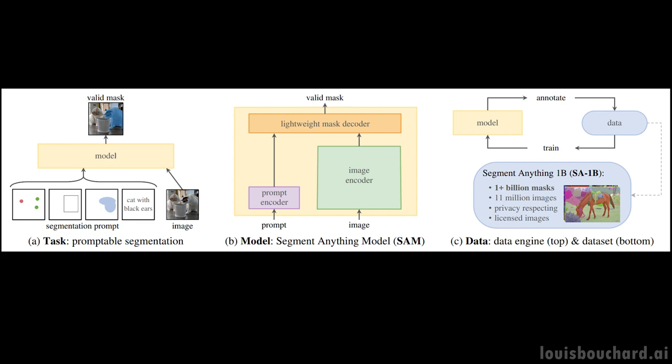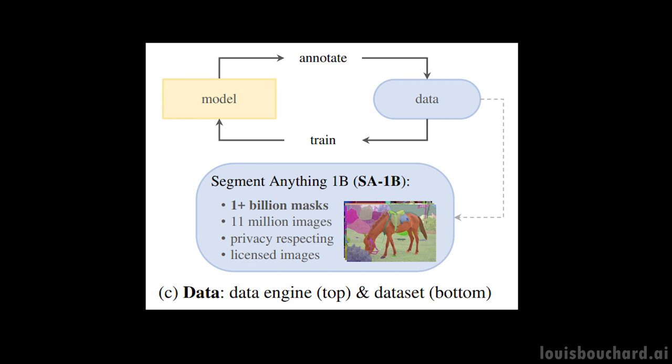As you can see here on the right, they use the model to annotate the data, further train the model and repeat. This is because we cannot simply find images with masks around objects on the internet. Instead, we start by training our model with human help to correct the predicted masks. We then repeat with less and less human involvement, primarily for the objects that the model didn't see before.